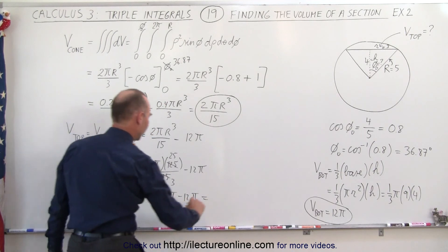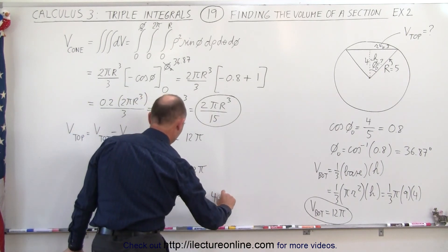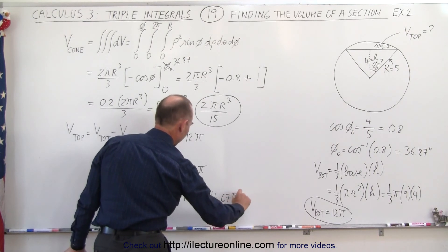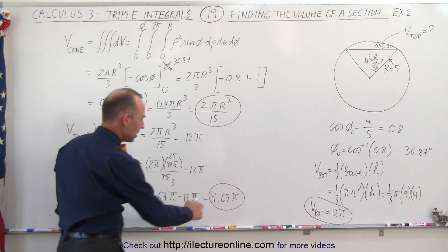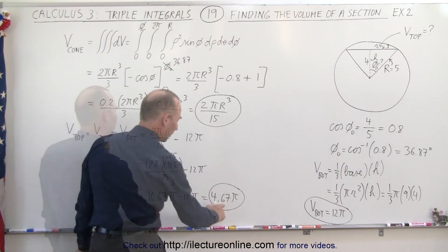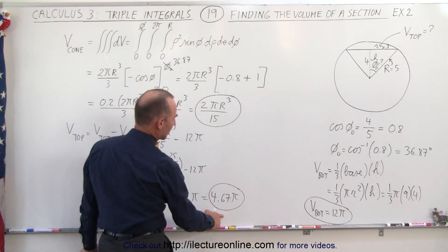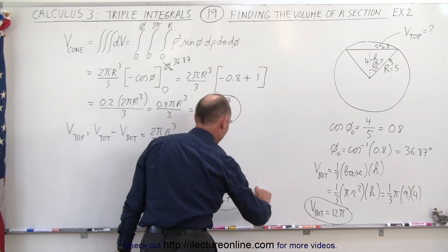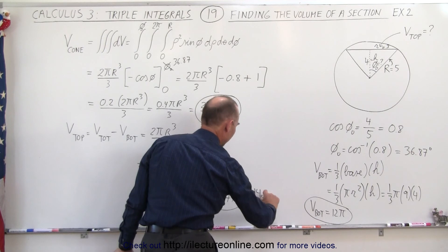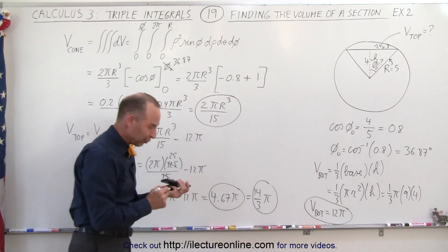And that would be equal to 4.67π as our final answer. Or, if we multiply things by 3, that would be, multiply times 3 divided by 3, that gives us 14/3, 14π/3, in case you like it in a fractional form.